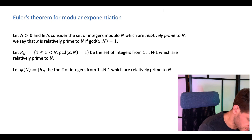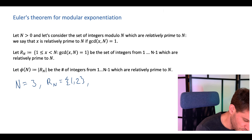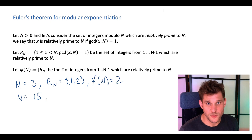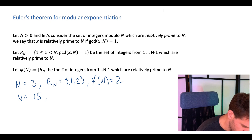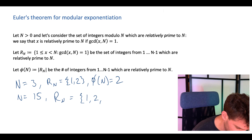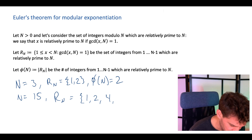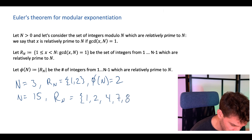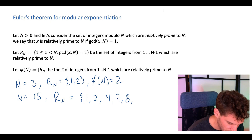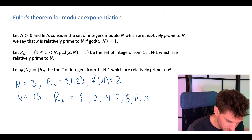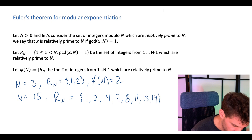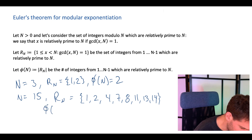Here's a simple example. If n equals 3, then R_n equals {1, 2}, so phi(n) equals 2. For n equals 15, we check which numbers from 1 to 14 are relatively prime to 15. Since 15 = 3 × 5, we remove multiples of 3 and 5. The numbers 1, 2, 4, 7, 8, 11, 13, and 14 are relatively prime to 15, so phi(15) equals 8.